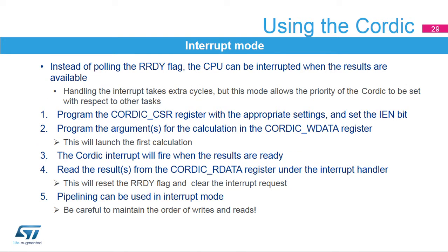The sequence described in this slide summarizes the use of the Cordic IP in interrupt mode. By setting the interrupt enable (IEN) bit in the Cordic CSR register, an interrupt will be generated whenever the RRDY flag is set. The interrupt is cleared when the flag is reset. This mode allows the result of the calculation to be read under an interrupt service routine and hence given a priority relative to other tasks. However, it is slower than directly reading the result or polling the flag due to interrupt handling delays.